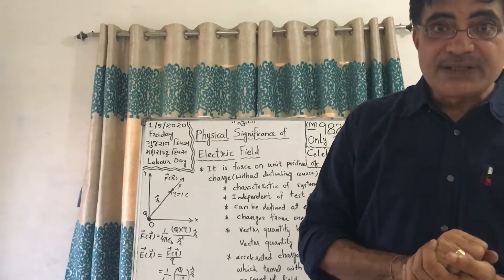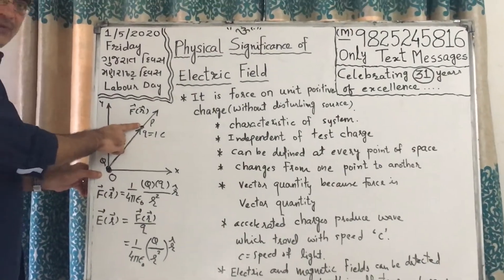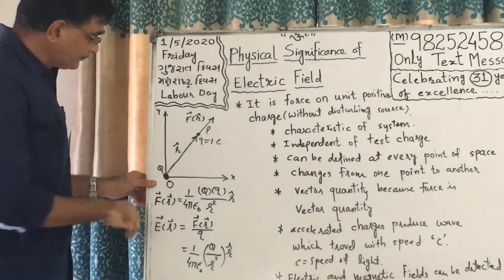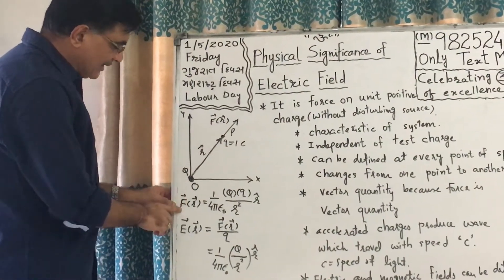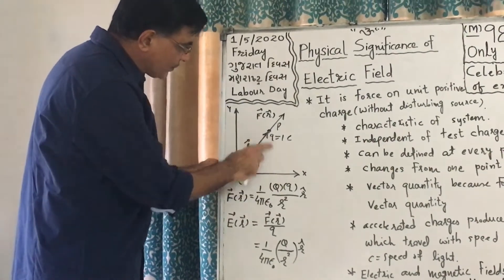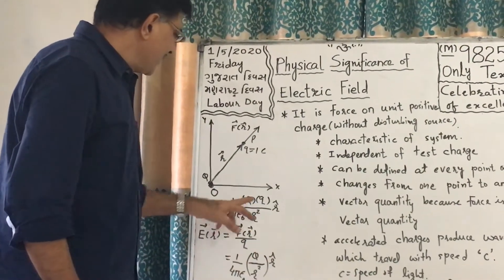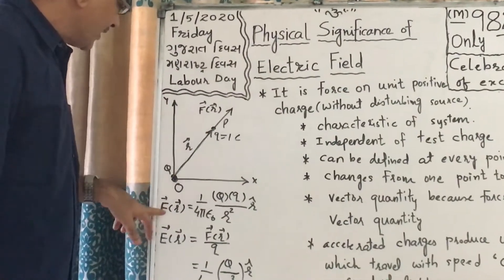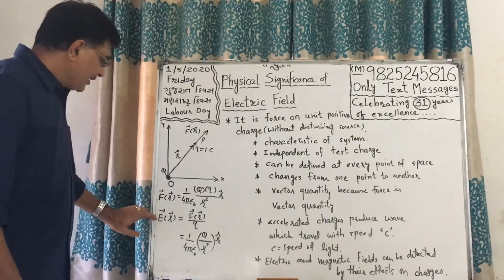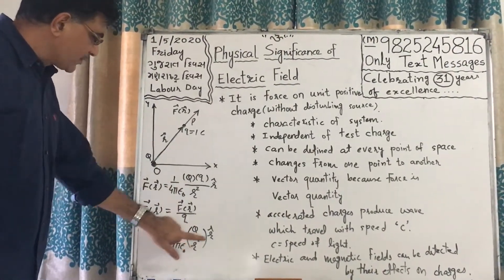Let us have a quick revision of what electric field intensity is. This is source charge capital Q, and this is test charge small q. We bring one coulomb as the test charge according to the definition. The force on small q by capital Q at position vector r is: one upon four pi epsilon naught, capital Q into small q, upon r squared, into unit vector r-hat. If we divide this by small q — the test charge — or in other words taking small q as 1 coulomb, we obtain electric field intensity: force upon charge = one upon four pi epsilon naught, capital Q upon r squared, into r-hat.